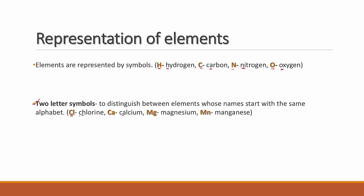Chlorine is represented as Cl — we skip the H in the center, so it is Cl, not Ch. Calcium simply uses its first two alphabets, Ca. These are examples of two-letter symbols where we select specific letters from the element's name.